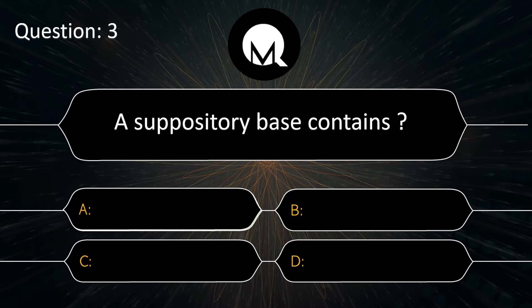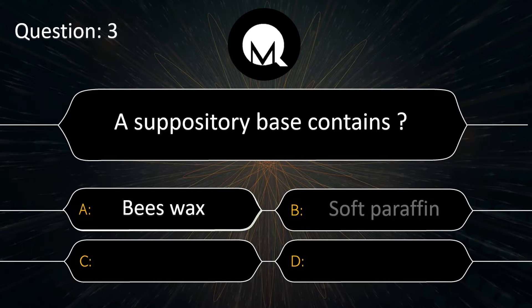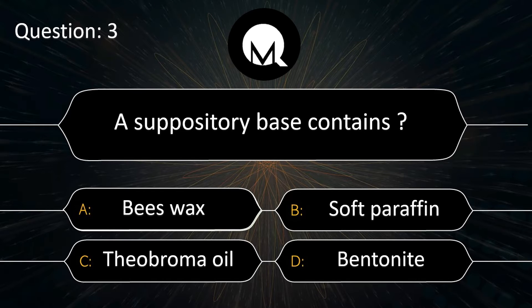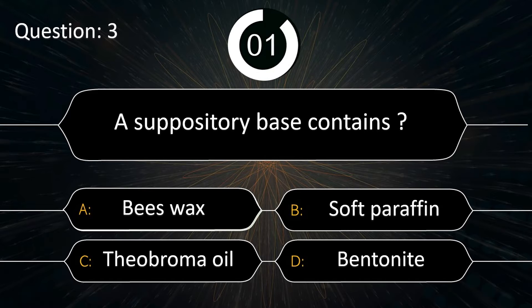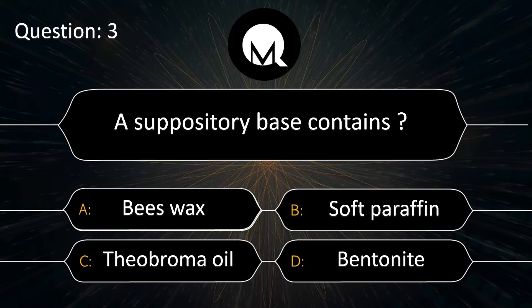A suppository base contains: beeswax, soft paraffin, theobroma oil, or bentonite. The answer is theobroma oil.